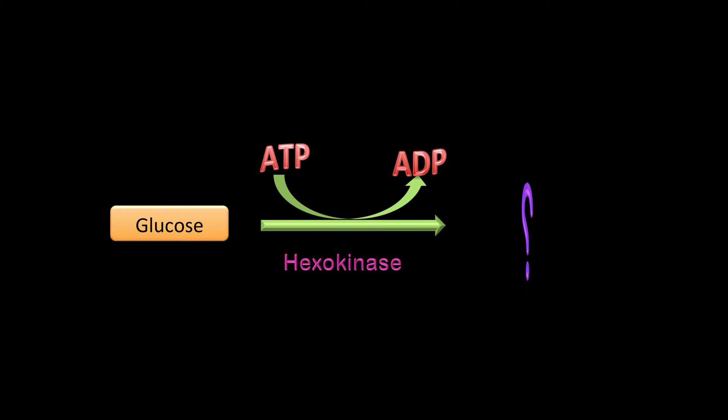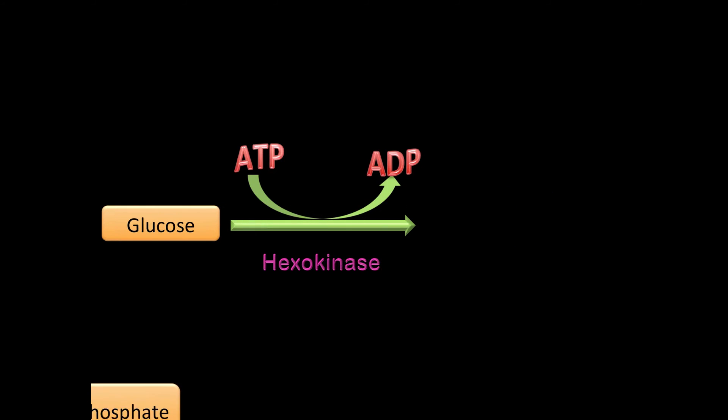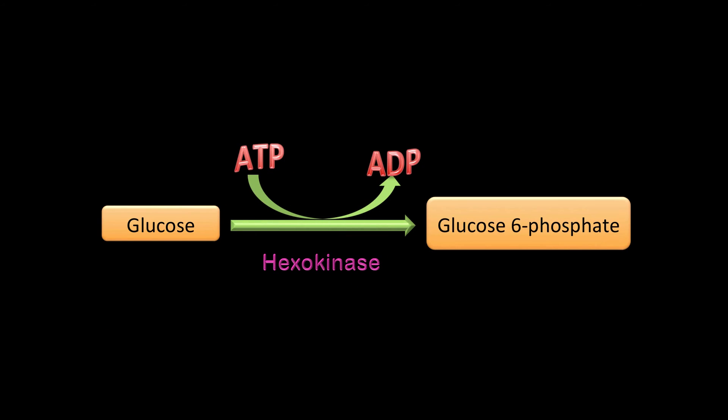This is a very easy one — if you get this wrong, you're in trouble. You have glucose, the enzyme is hexokinase, and you're consuming one molecule of ATP. This is the first priming reaction of glycolysis. The product — it's a kinase enzyme, so the product is glucose-6-phosphate.